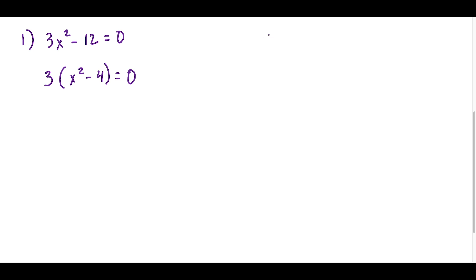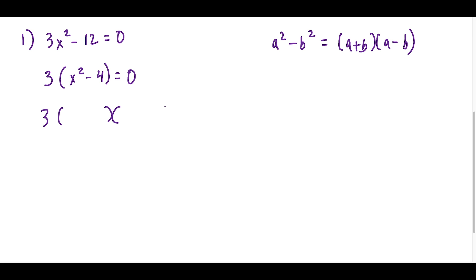From this step, the next type of factoring we need is difference of two squares — any time we subtract two square terms, we can factor as (a + b)(a - b). Looking at x² - 4, we ask which term times itself equals x²: that's x. Then which term times itself equals 4: that's 2, since 2 × 2 = 4.